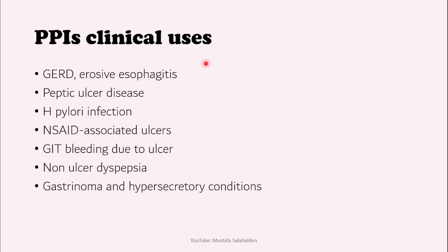For the clinical uses of these drugs: they are used in gastroesophageal reflux disease (GERD) and erosive esophagitis, where they are the most effective agents and are mostly used as first-line treatment for symptomatic patients. They are also used for peptic ulcer disease, providing symptomatic relief and ulcer healing for duodenal ulcers, and for gastric ulcers to a lesser extent.